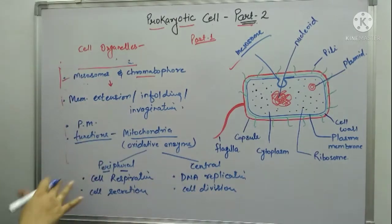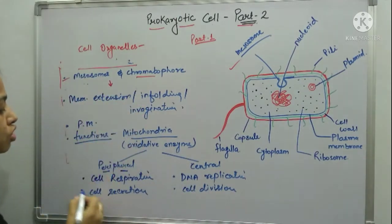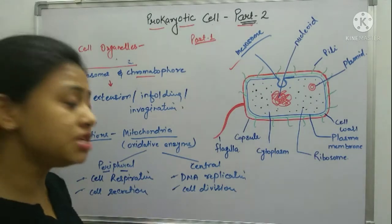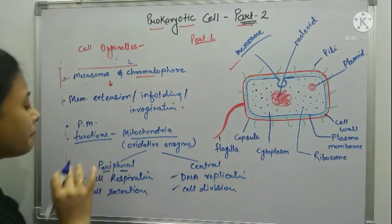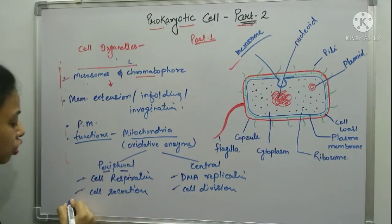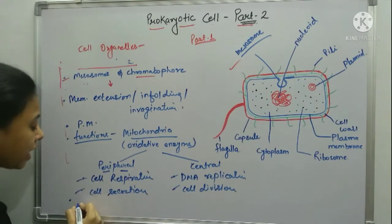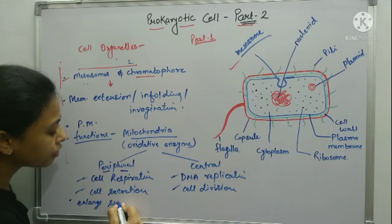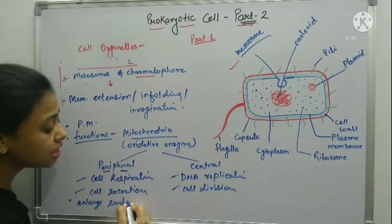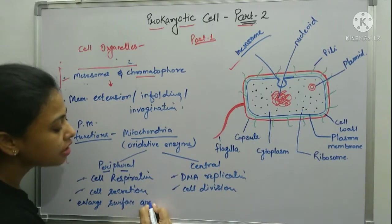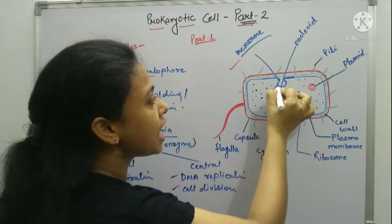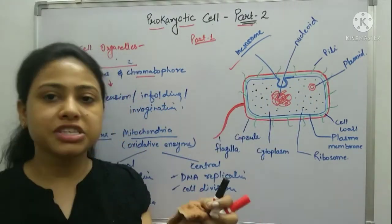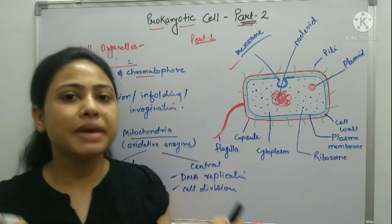So if anybody asks what is the role of mesosomes, you can talk about all these roles — these are all the functions of mesosomes. Besides this, one more thing it does: it extends or enlarges the surface area. As you can see, if we stretch it out, it will increase the surface area of the plasma membrane.